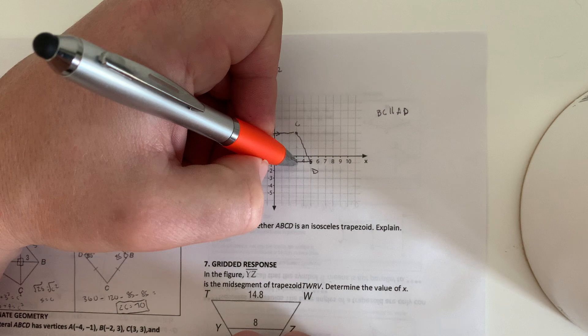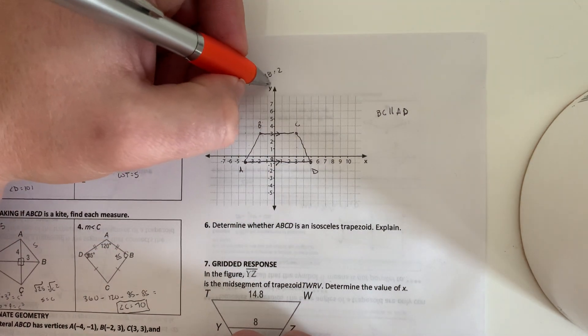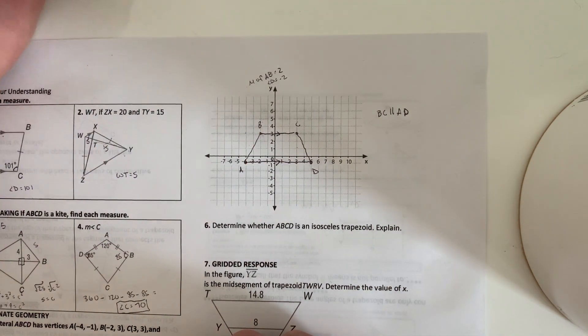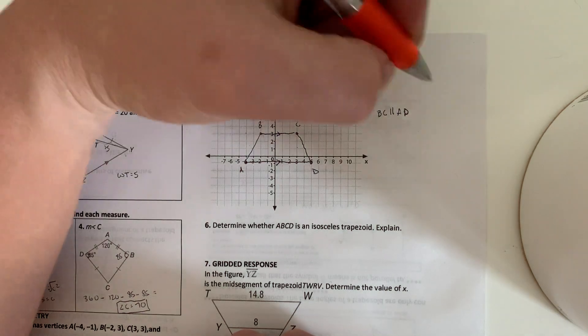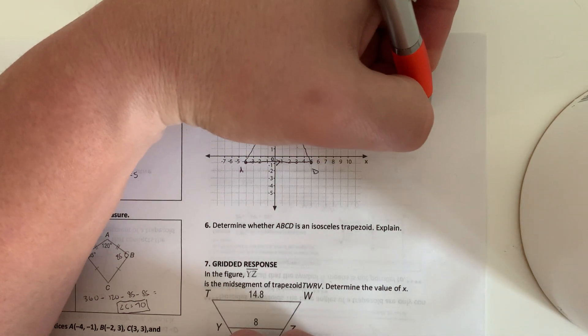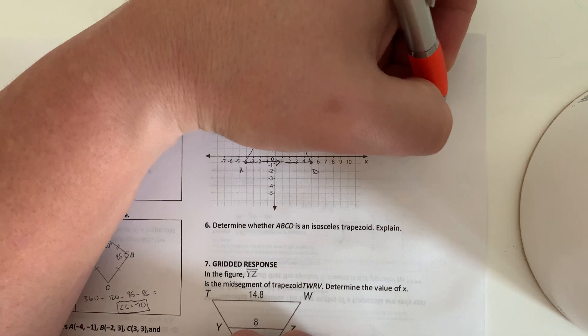CD's would be 1, 2, 3, 4, 1, 2, which would be negative 2. So they are opposites. Well, they're not the same. So they're not parallel. So AB is not parallel to CD.